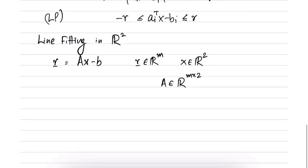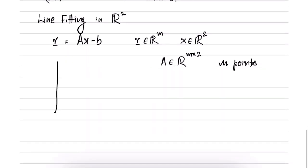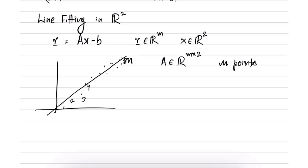A has two columns and m rows. In a line fitting problem, you have m points and you are trying to fit a line in a two-dimensional space. The parameters of the line — namely the slope and the intercept — are contained in the vector x which is in R^2. Each of the m points is described by two coordinates, which are contained in A and b.